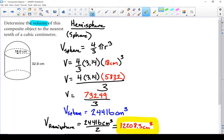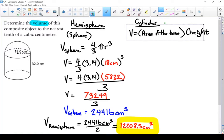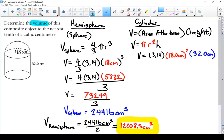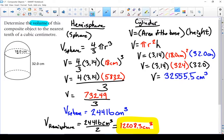So the volume of the hemisphere on top is 12,208.3 cubic centimeters. Let's do the volume of the cylinder. The volume of a cylinder is no different than finding the volume of a right prism. Area of the base times the height. So in this case, the area of the base of a cylinder is pi r squared. Then we're going to go through the calculations.